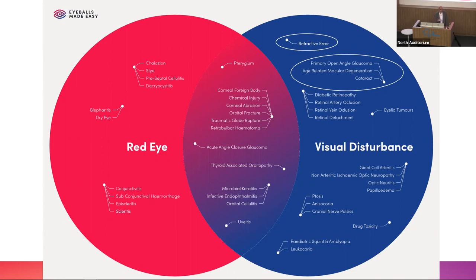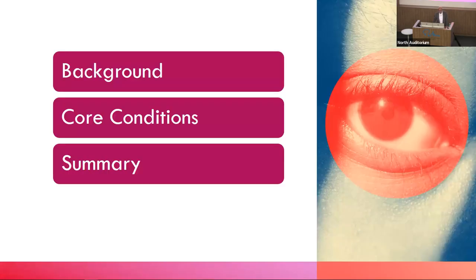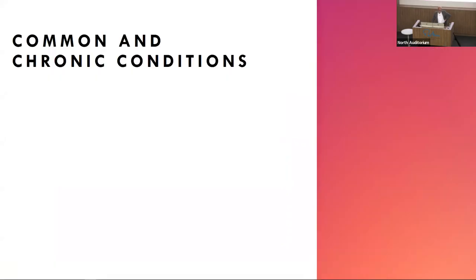The big five chronic conditions in ophthalmology are those four plus diabetic retinopathy. I won't talk about diabetic retinopathy today - there's something online about that, perhaps even a whole lecture, so just look at that for diabetic retinopathy.